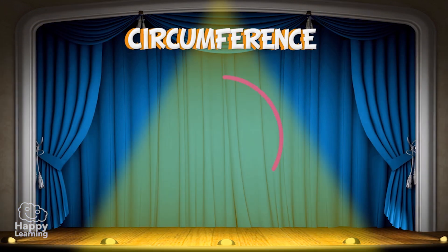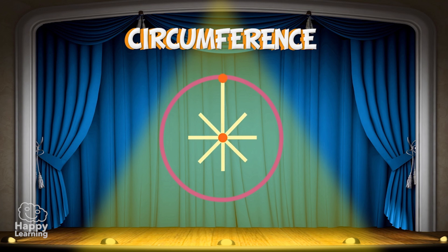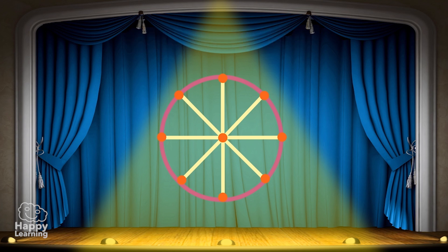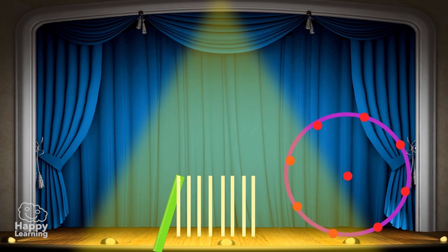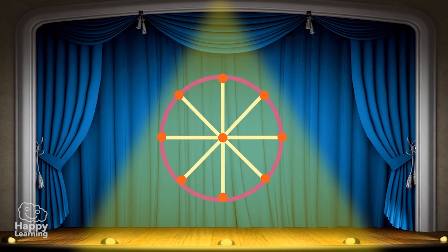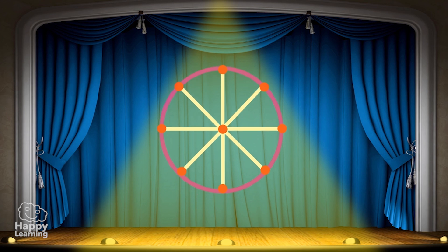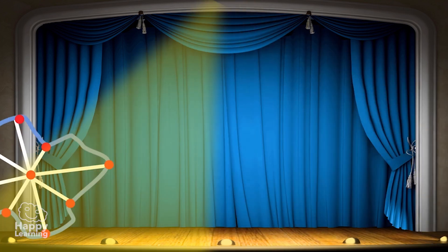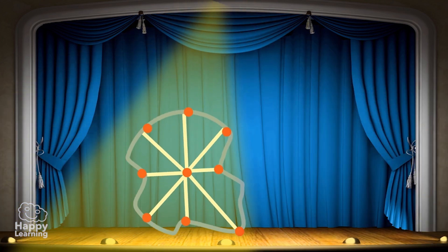A circumference is a closed curve where all points are at the same distance from the center. Here we can observe that all points on the circumference are at the same distance to the center. If it wasn't like that, it wouldn't be a circumference, but rather something strange.